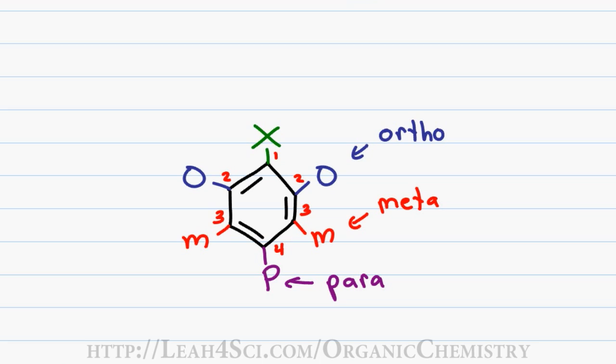So to quickly recap, if we have a substituent on carbon 1 and 2, these are considered ortho to each other. If we have a substituent on 1 and 3, these are considered meta to each other. And if we have substituents on 1 and 4, these are considered para to each other.